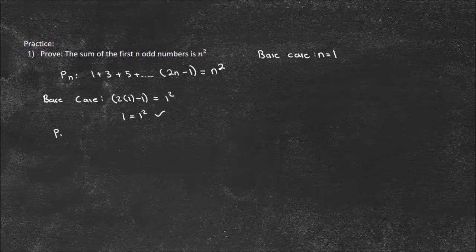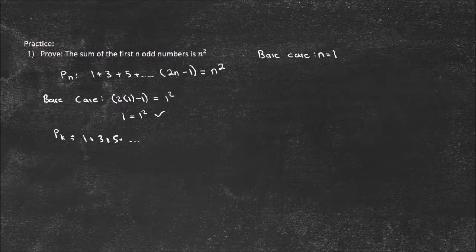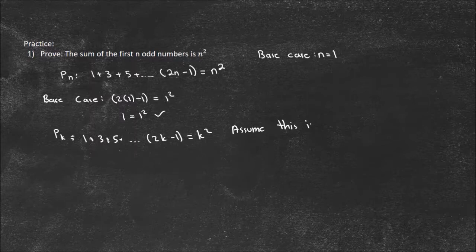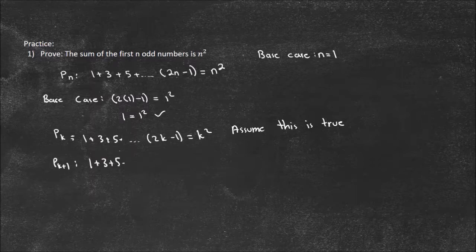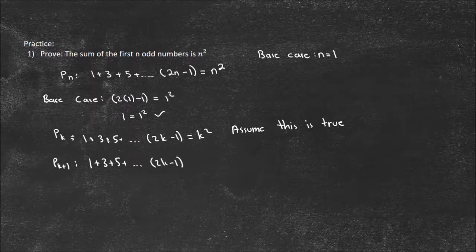Now I want to show the inductive step. Assume p of k is true: 1 plus 3 plus 5 plus ... plus 2k minus 1 equals k squared. Assume this is true. My goal is to show that p of k plus 1 is also true. So I need to show that 1 plus 3 plus 5 plus ... plus 2k minus 1 plus 2 times k plus 1 minus 1 equals k plus 1 squared. I write it starting from the 2k minus 1 term so I can reference what we're assuming is true.